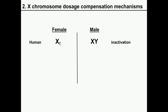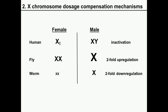X-chromosome dosage compensation is an excellent model to study specification of chromosomal domains for gene regulation, because in many organisms a specific gene regulatory complex is specifically targeted to only the X-chromosome to regulate transcription in one of the two sexes. In humans, this is done by inactivation of one X-chromosome in females. In flies, it's done by activation of the single X-chromosome by twofold in males. In C. elegans, this is done by down-regulation of both X-chromosomes in hermaphrodites.